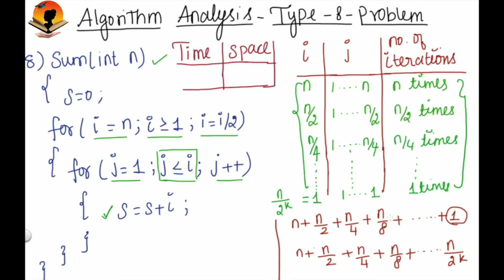Now you can solve this series using geometric progression. Here the starting term is n and the common ratio is 1 by 2. Totally how many terms here we are having? K plus 1 terms. Let's take 2 power k, so 0 to k. Totally how many terms? K plus 1 terms.